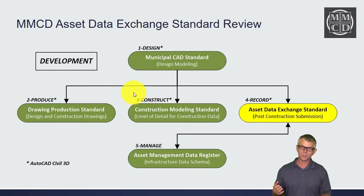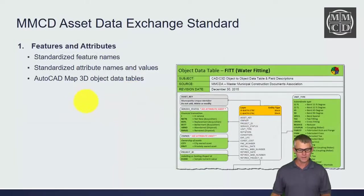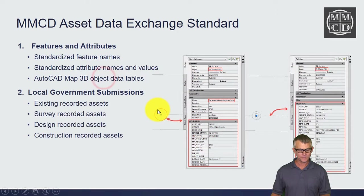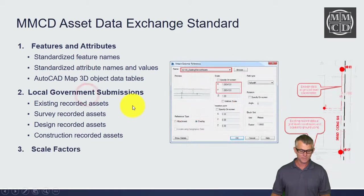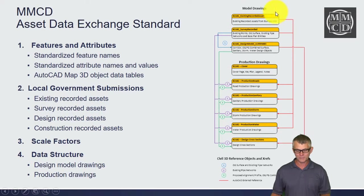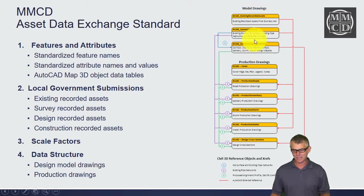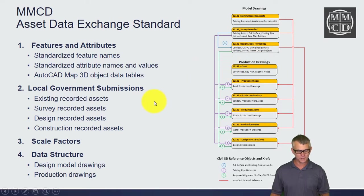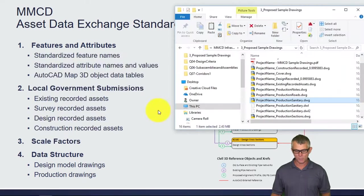The Asset Data Exchange standard brings consistency to asset types and attribution for post-design and post-construction submissions. It's a set of standardized features and attributes using Map 3D object data tables. It consists of existing recorded assets, survey recorded assets, design recorded assets, and construction recorded assets. It includes the scale factor — important because construction is based on ground-level coordinates while the local government archives at grid-level coordinates — and also defines the final data structure. The emphasis has shifted from a plan-profile deliverable to a design model drawing containing all design work, with production drawings sourcing data from those design model drawings.